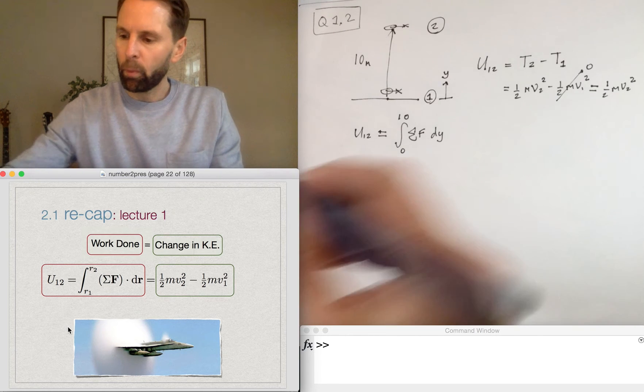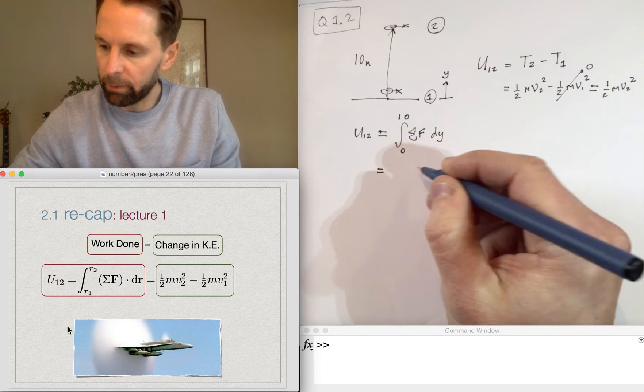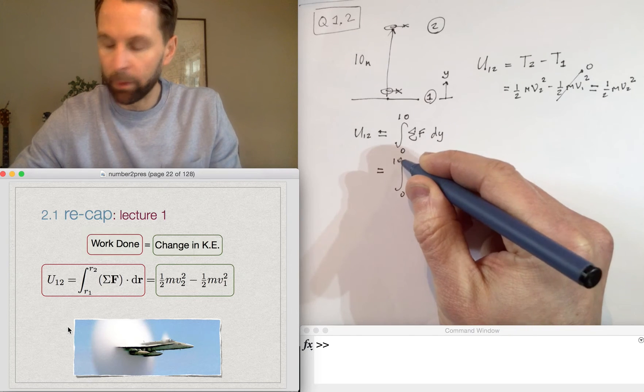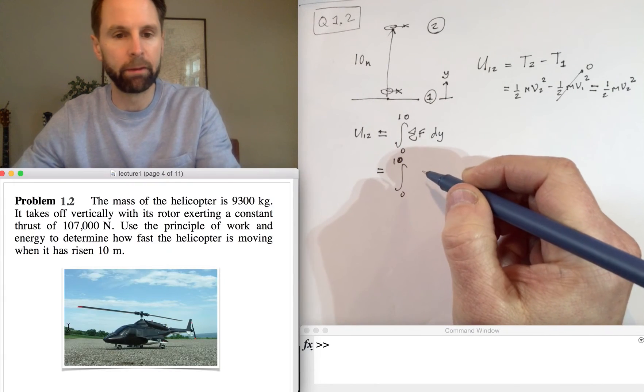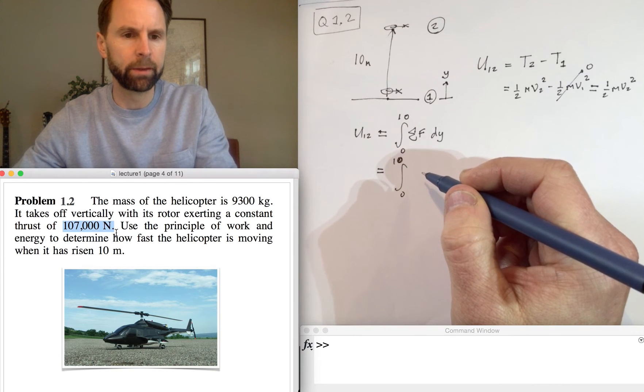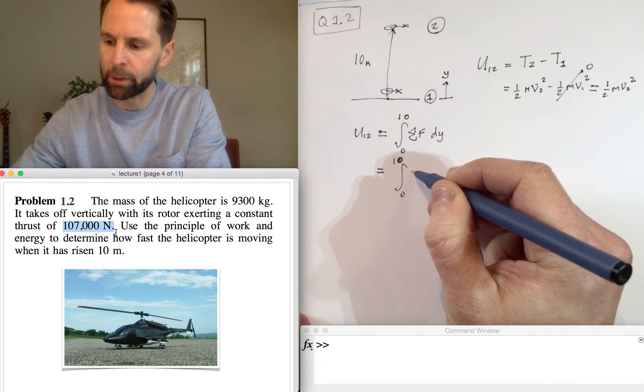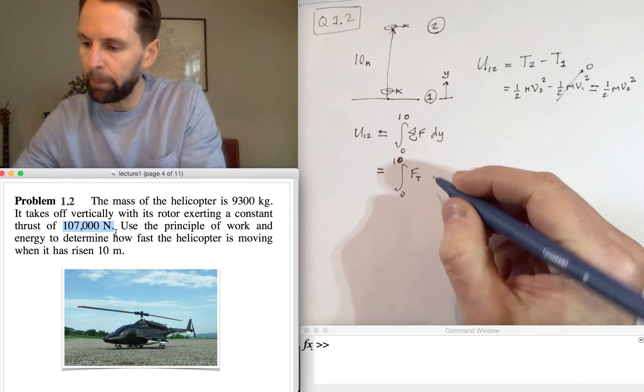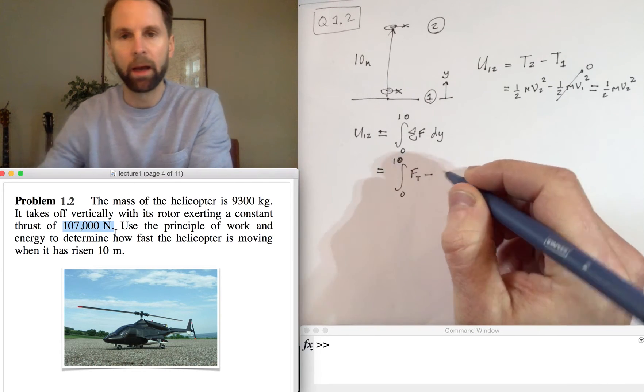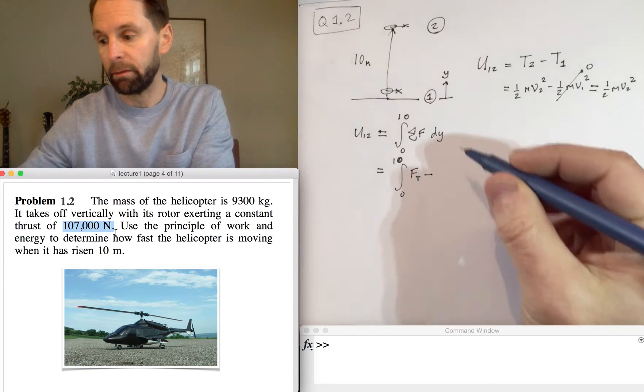So what is the resultant force? Well, there are two forces: one is a thrust force which is given in the question of 107 kilonewtons. Let's just call that F_T; it's positive because it's going upwards.